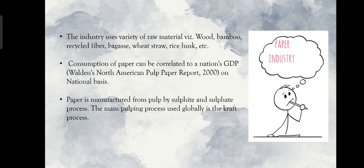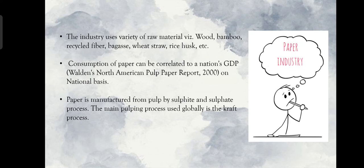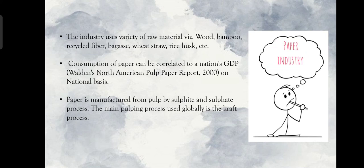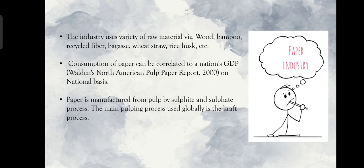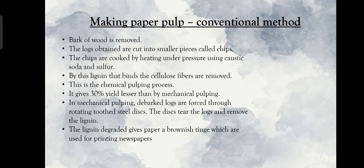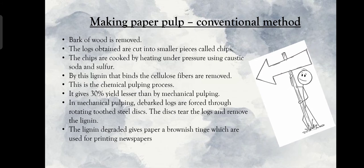The industry uses a variety of raw materials — wood, bamboo, recycled fiber, bagasse, wheat straw, rice husk, etc. Consumption of paper can be correlated to a nation's GDP. On a national basis, paper is manufactured from pulp by sulfite and sulfate processes. The main pulping process used globally is the kraft process.